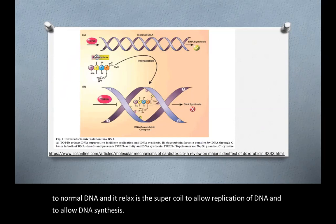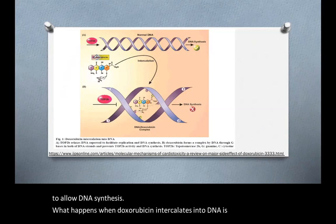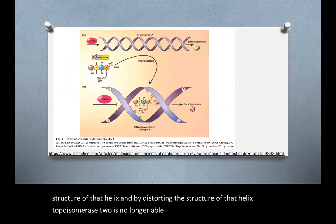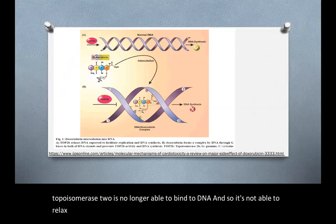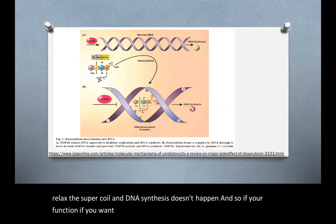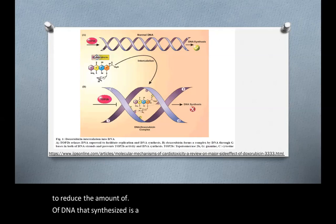What happens when doxorubicin intercalates into DNA is it distorts the structure of that helix. And by distorting the structure of that helix, topoisomerase 2 is no longer able to bind to DNA. And so it's not able to relax the super coil and DNA synthesis doesn't happen. And so if your function, if you want a drug to function as an anti-cancer agent, being able to reduce the amount of DNA that's synthesized is a good goal.